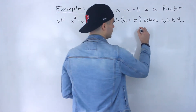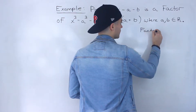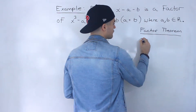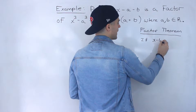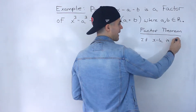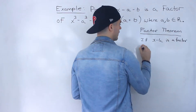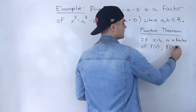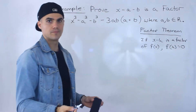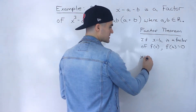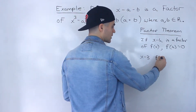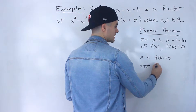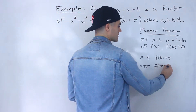Let's do a quick review of the factor theorem. What does the factor theorem say? Well, it basically says that if x minus k is a factor of f(x), then f(k) is going to equal 0. So for example, if x minus 3 is a factor of f(x), then f(3) equals 0. Or if x plus 5 is a factor of f(x), then f(negative 5) is going to equal 0.